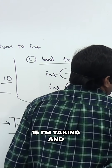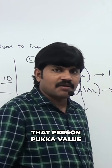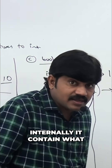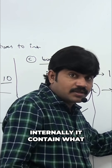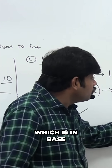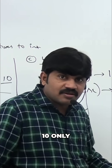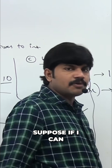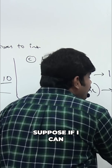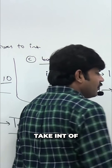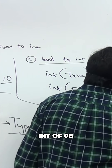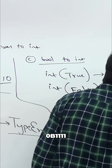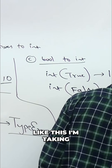For example, int("15") — taking a 100% valid value. Even though it is a string, it internally contains an integral value which is in base 10 only. So the value is 15. Now suppose if I take int("0b1111") — binary form.